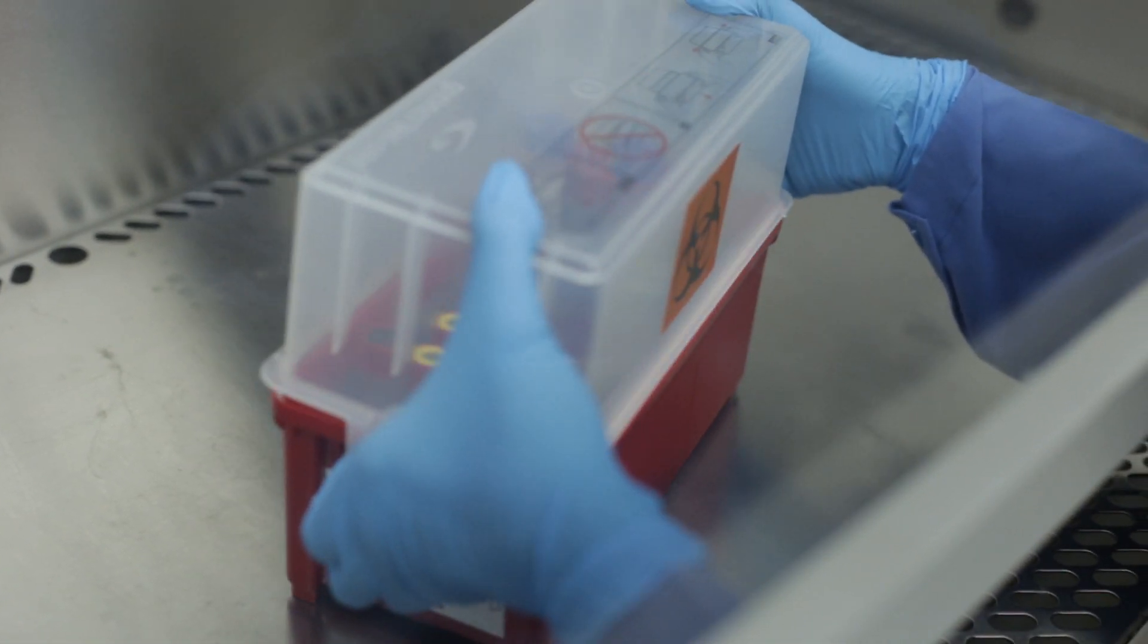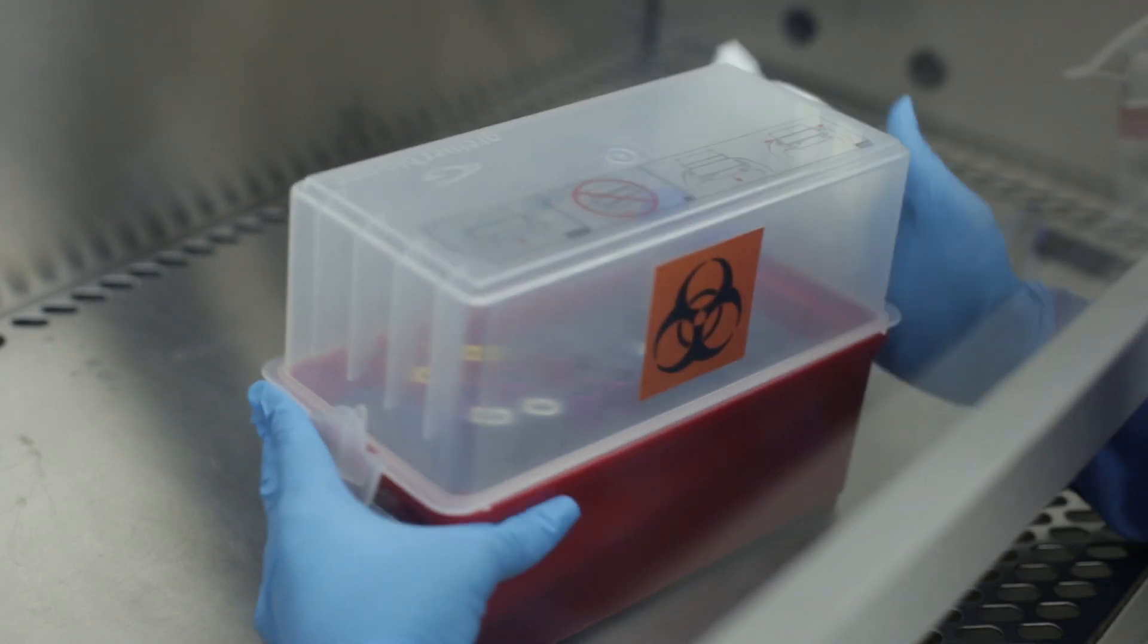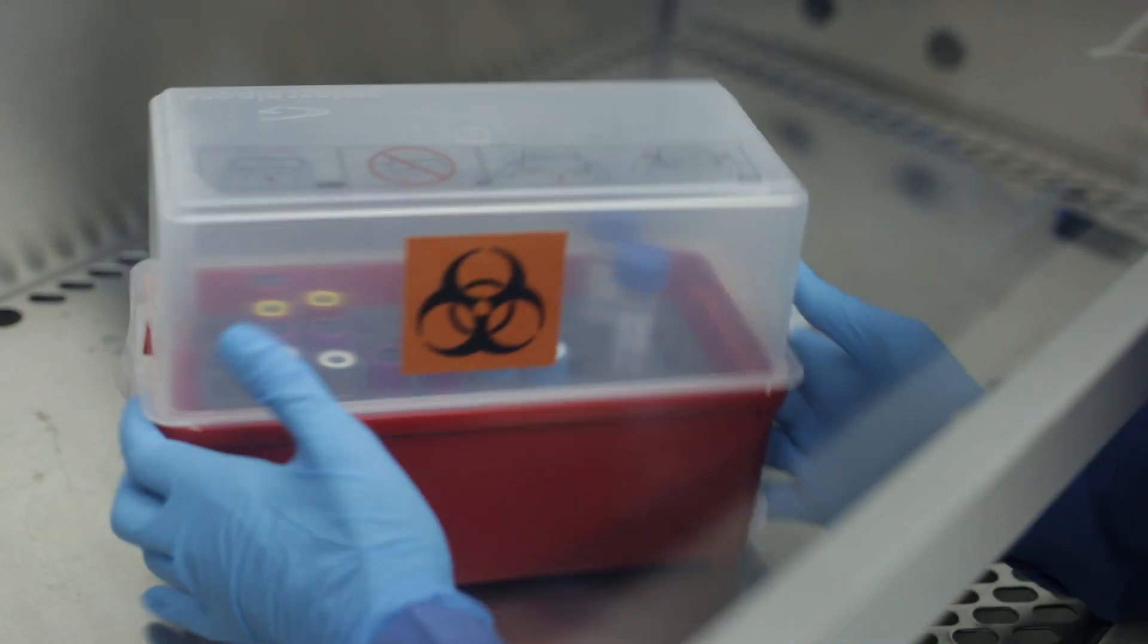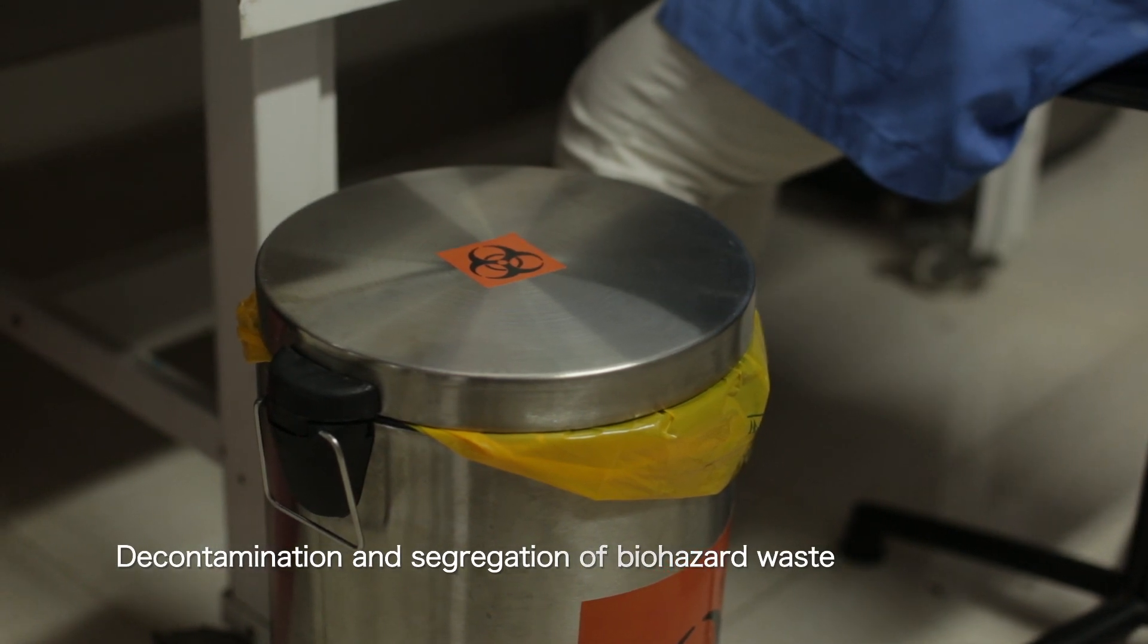Primary containers must be placed inside a leak-proof secondary container. Name of the laboratory and biohazard label must be displayed on the secondary container. The outer surface of the container must be decontaminated before transporting.